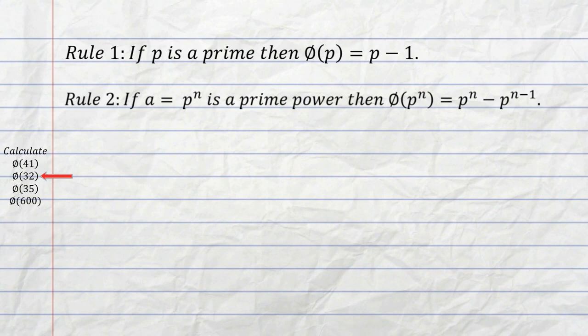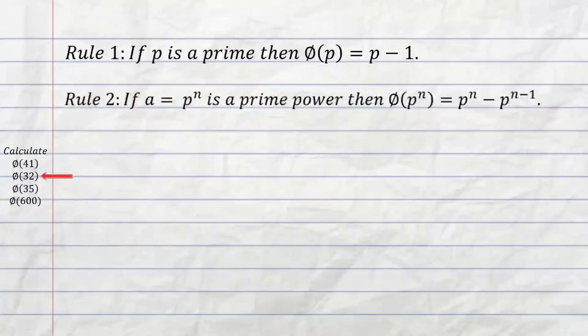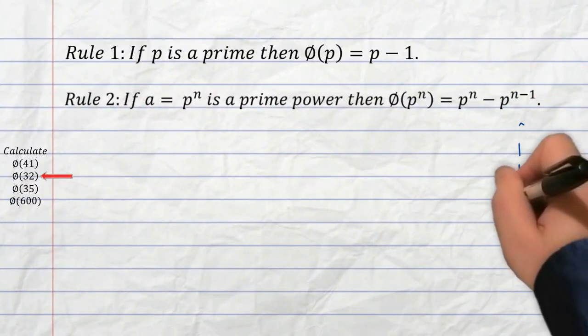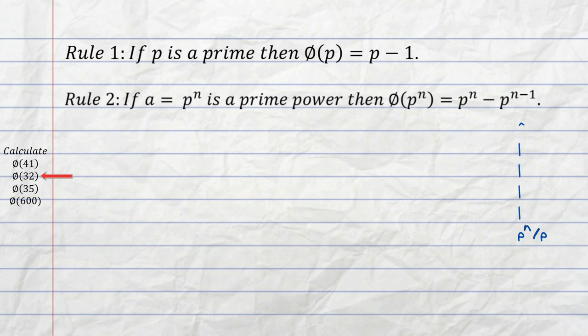And that says that if p to the n is a prime power, then phi of p to the n is equal to p to the n minus p to the n minus 1. And you can sort of see why that's true. We've got p to the n minus p to the n minus 1. Well, that p to the n is the actual number that we're trying to get the result for, and what we're taking off is p to the n minus 1, and that's the number of times p to the n is divisible by p.